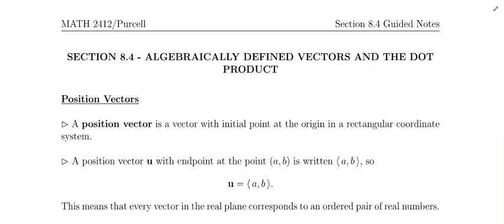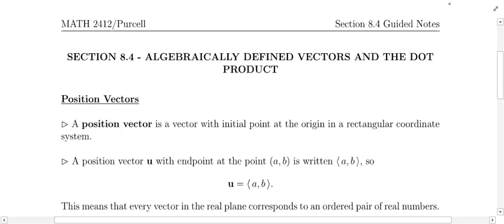Section 8.4: Algebraically Defined Vectors and the Dot Product. The first thing we're going to talk about is something called a position vector. A position vector is a vector with initial point at the origin in a rectangular coordinate system. In the last section we looked at vectors without any coordinate system — just a grid with an initial point drawn to a terminal point. Now, placing a vector in a rectangular coordinate system means the initial point must be at the origin.